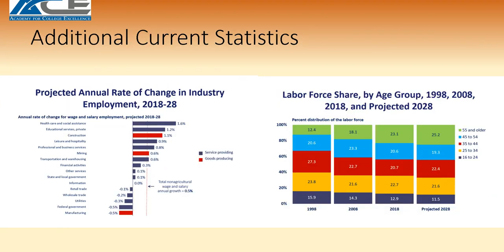You can also look at statistics on the projected annual rate of change. In blue are service-providing industries; in red are goods-producing industries. You can see that the blue — the service sector — is ahead of the goods-producing, or manufacturing, sector.